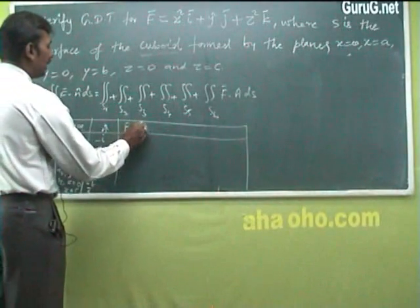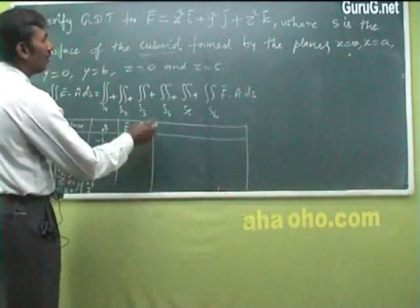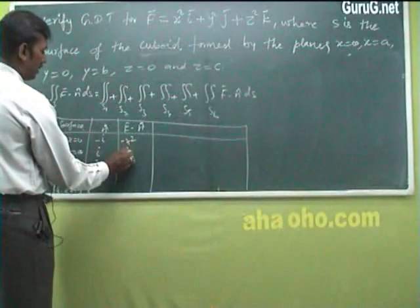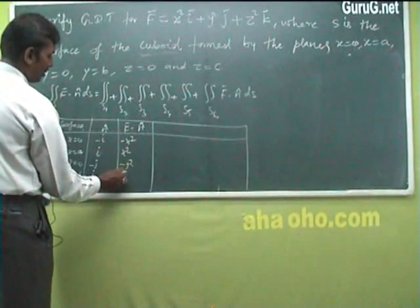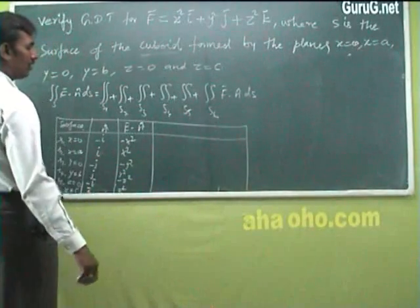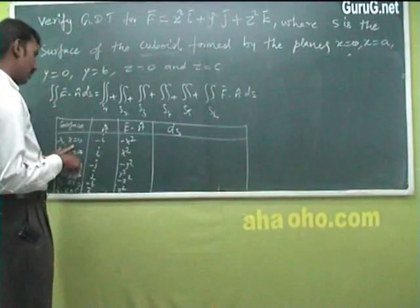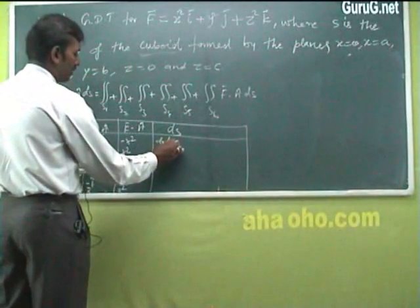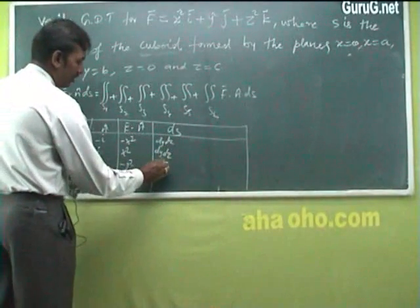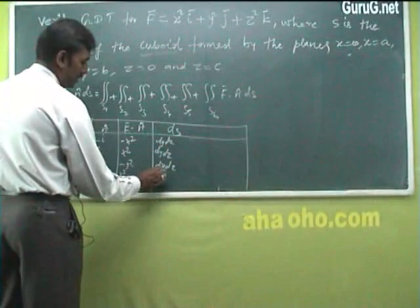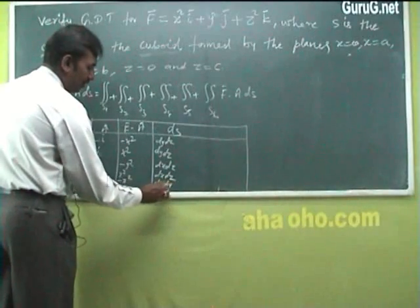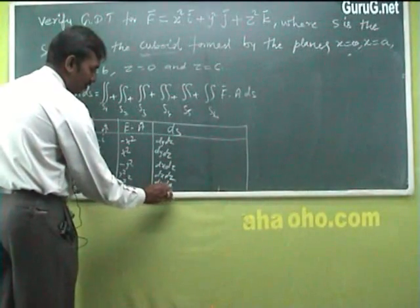Computing F·n̂ for each surface: F·n̂ equals −x², +x², −y², +y², −z², +z² for S1 through S6 respectively. The surface elements dS are: dy dz (for the yz-plane faces S1, S2), dx dz (for the xz-plane faces S3, S4), and dx dy (for the xy-plane faces S5, S6).